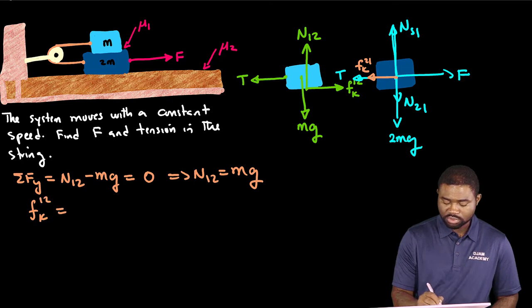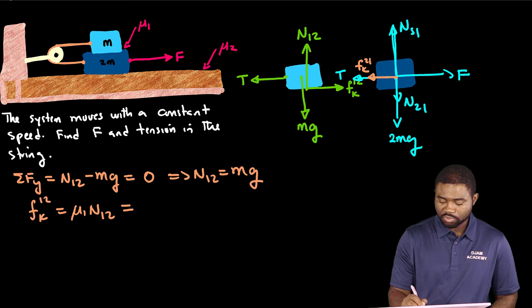By definition, Fk12 is equal to μ1 N12, which will be equal to μ1 mg.